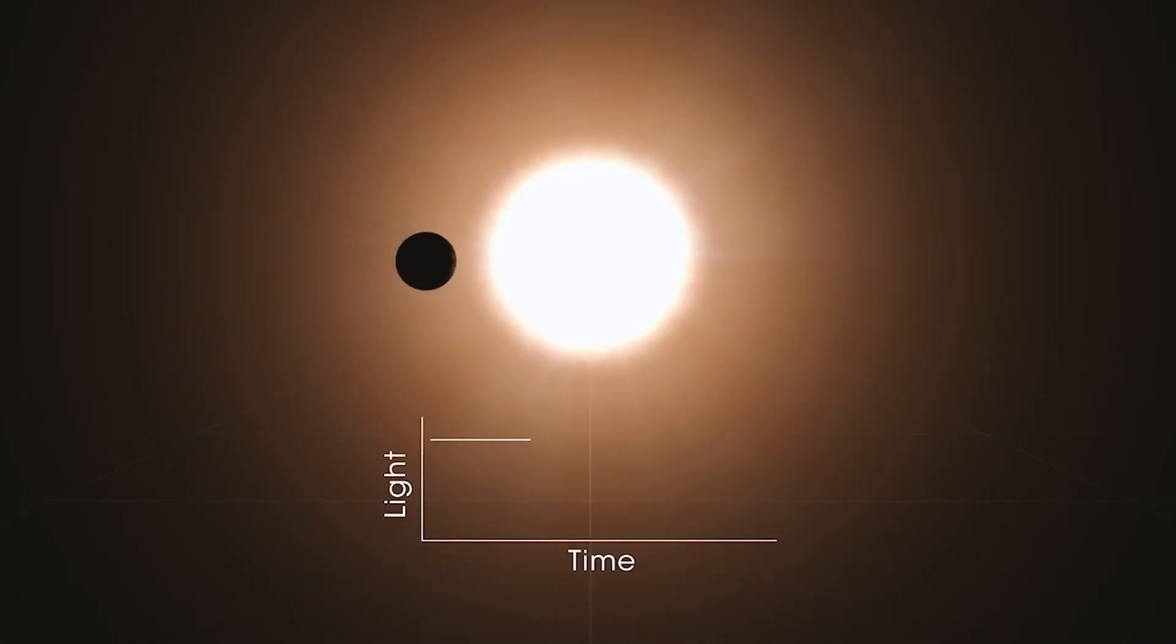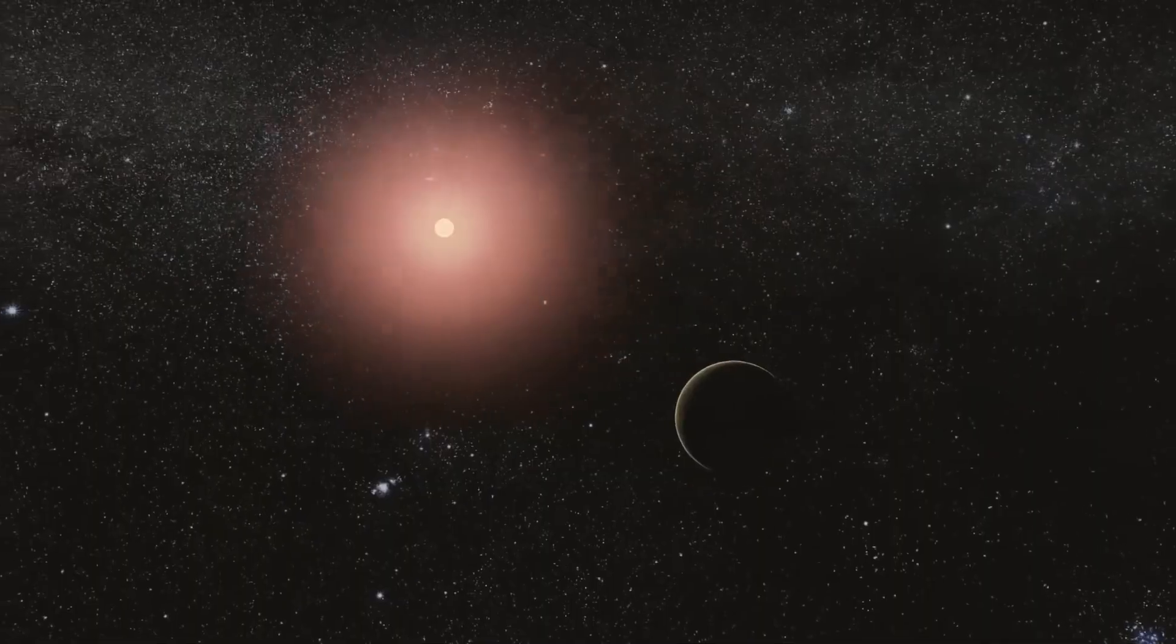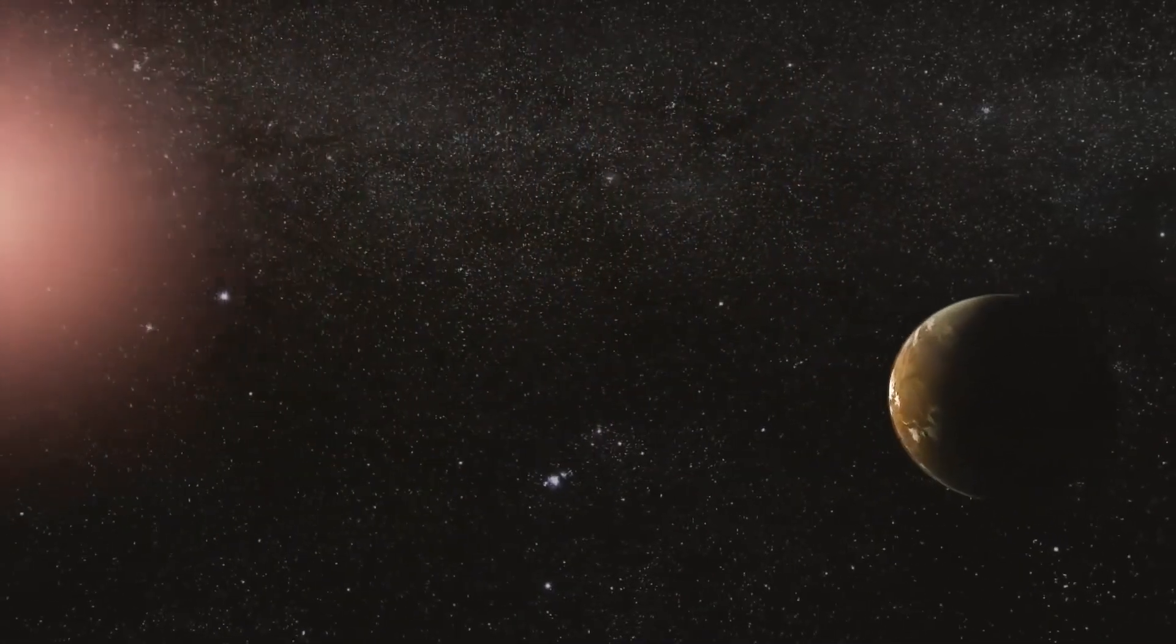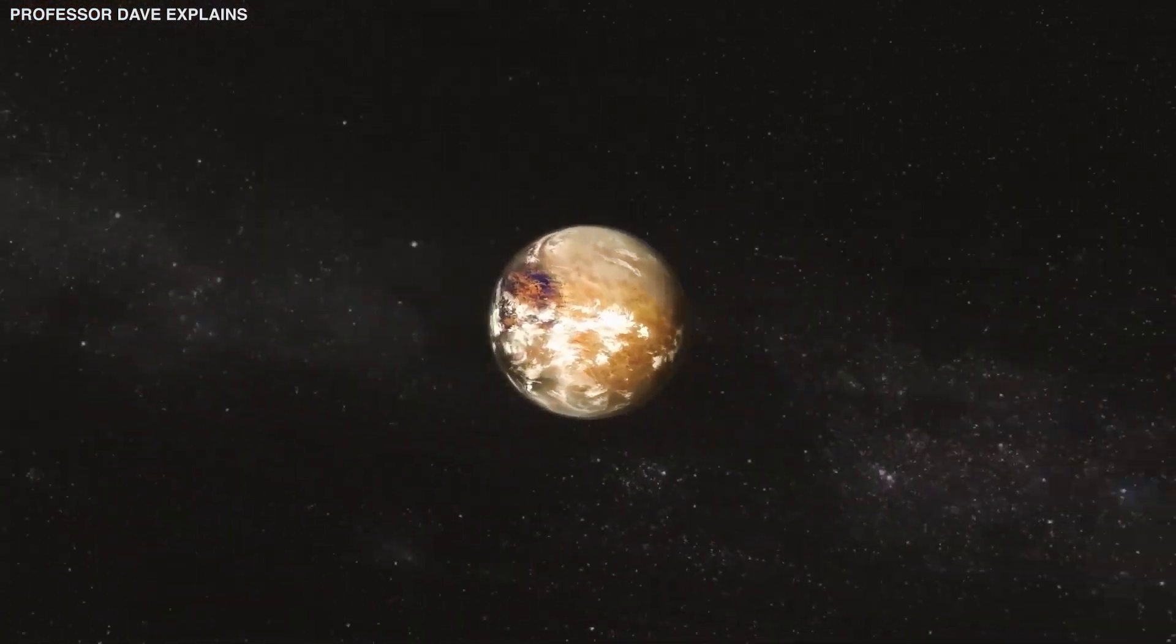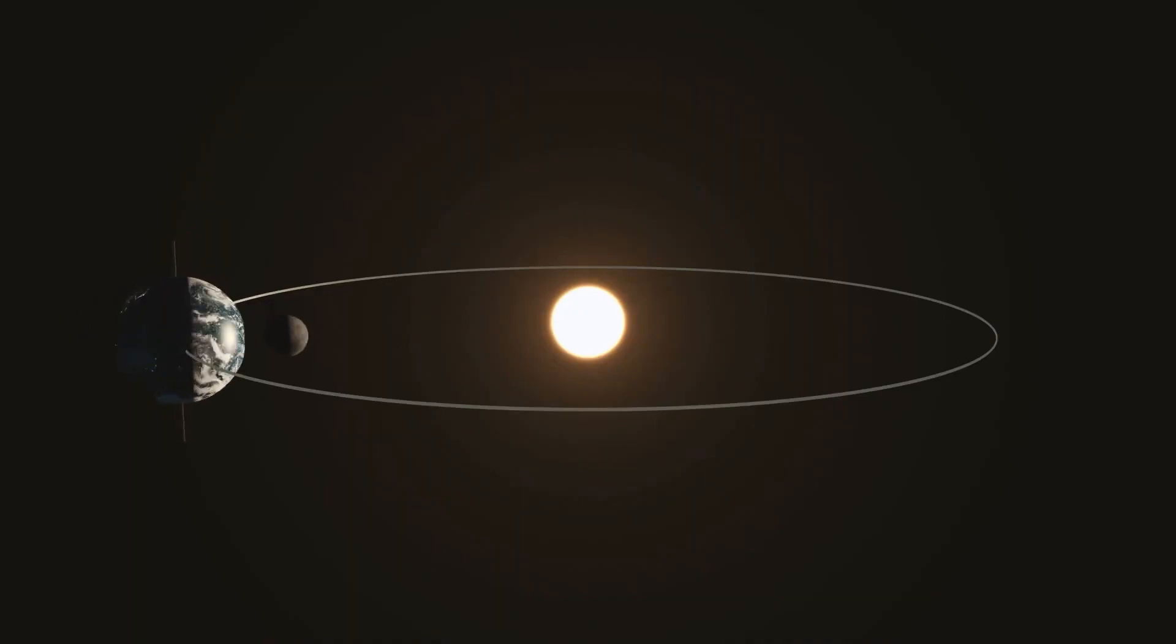Proxima b is tidally locked in synchronous motion, which means one side of Proxima b receives the light forever, while the other side is in complete darkness, also forever. The motion is similar to how the Moon appears on the Earth.